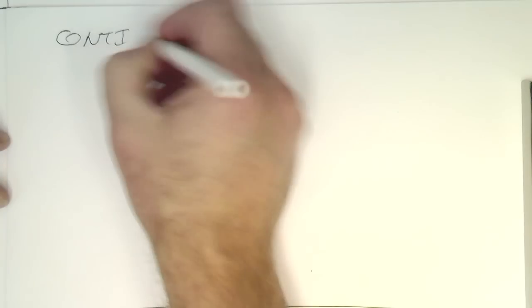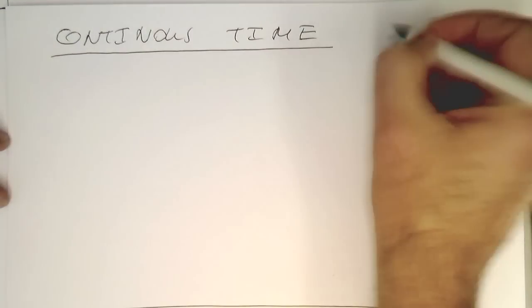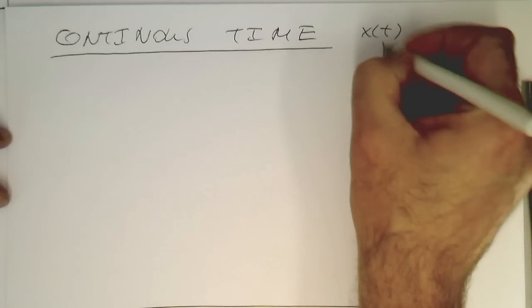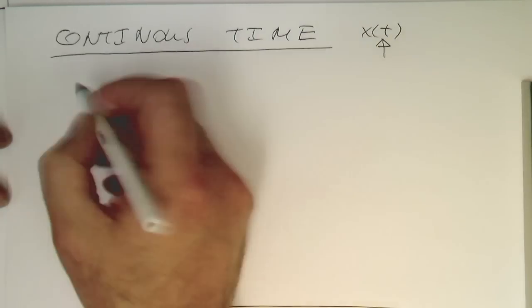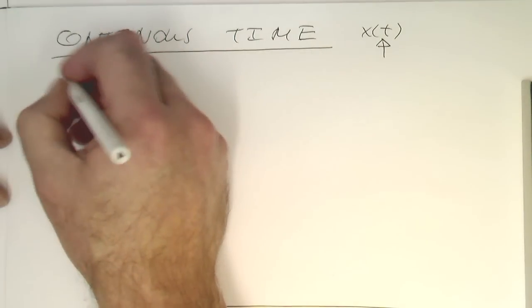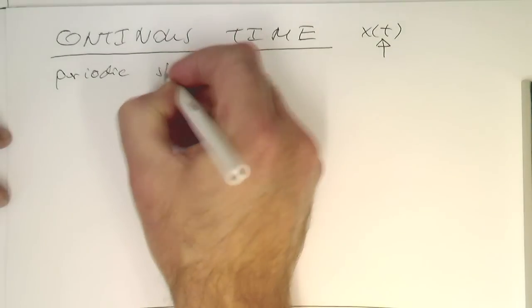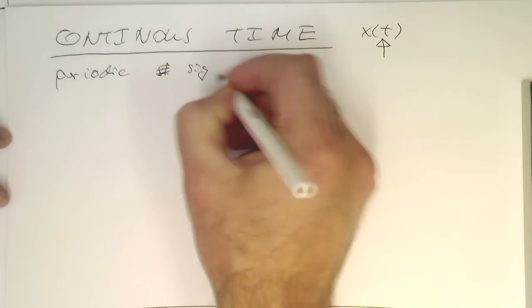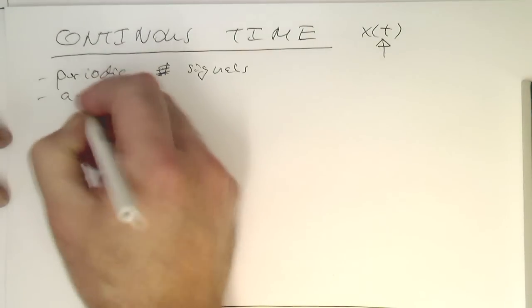Let's first talk about continuous time representations, something like x(t), so we have continuous representation. There we could have two cases: periodic signals and aperiodic signals.